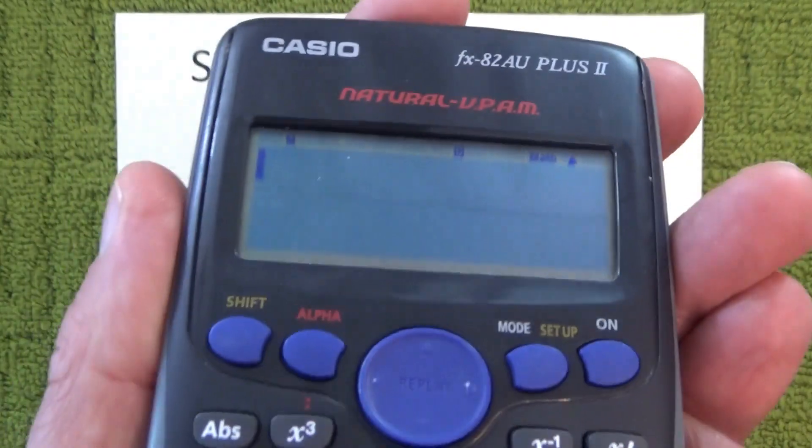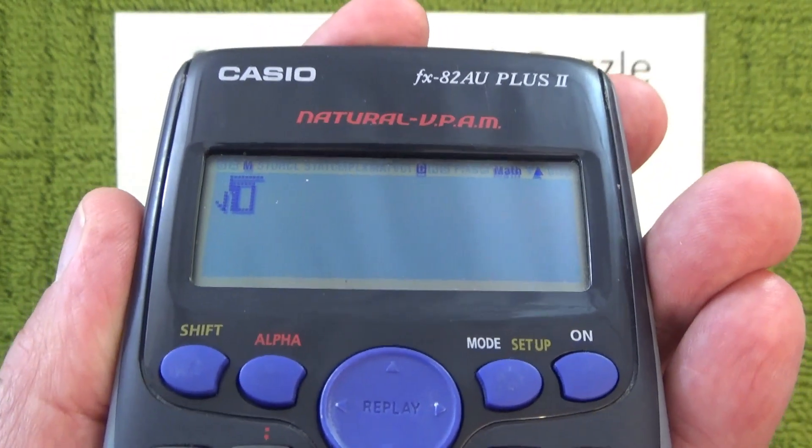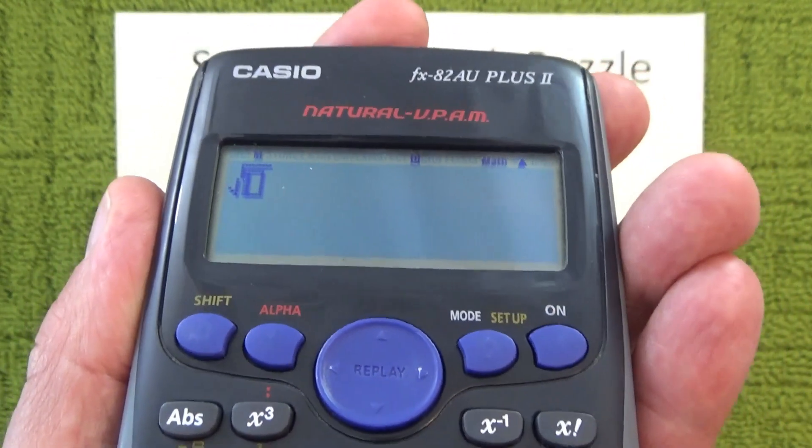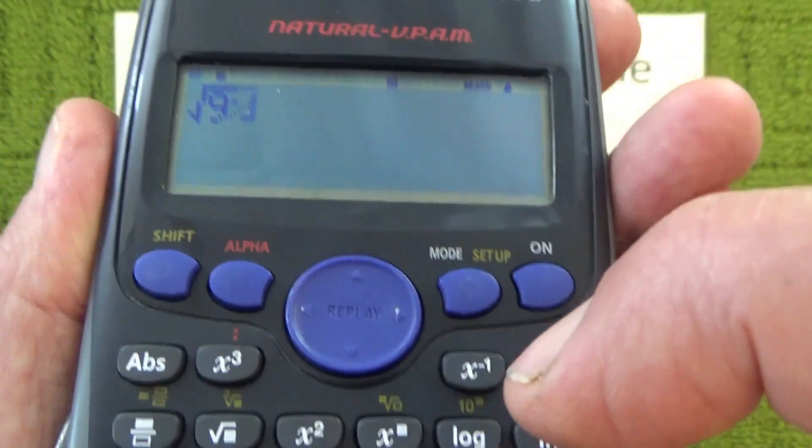And I'm going to show you that that is correct by getting out my trusty scientific calculator, pressing the square root button, pressing 9, and then the percentage button.